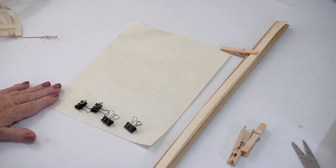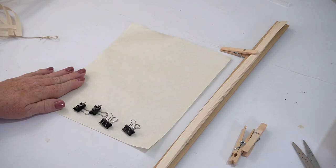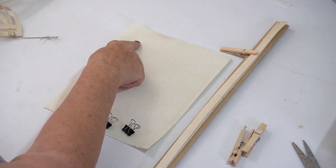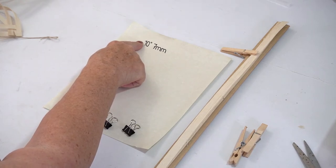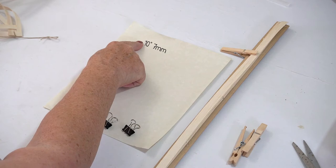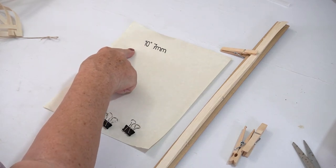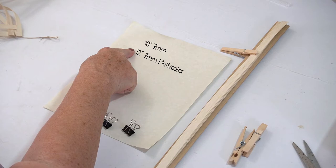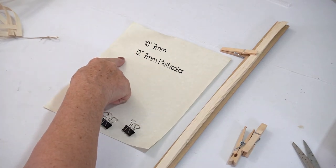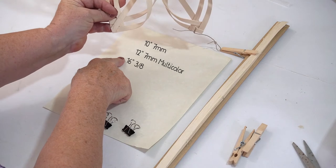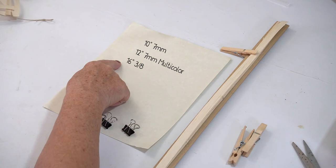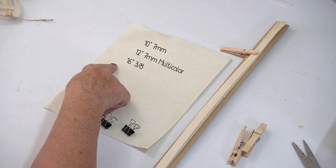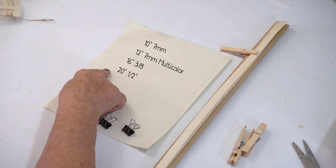First, I'm going to give you the pattern to make them in different sizes. I have here the 7mm, 10 inches long, the smallest one. The multicolored one you see is 7mm cut 12 inches long. Then we have 3/8 inch at 16 inches long, 1/2 inch at 20 inches long, and 5/8 inch at 22 or 24 inches long.